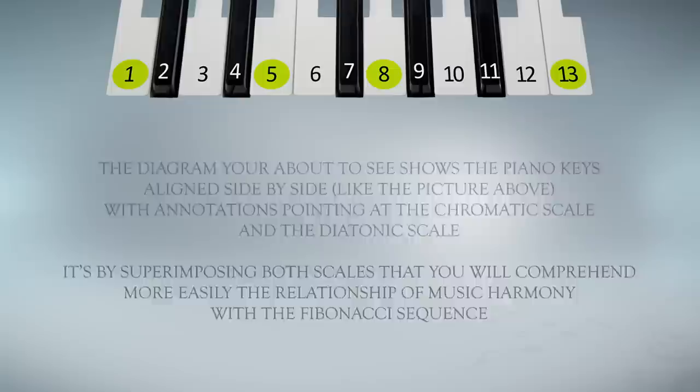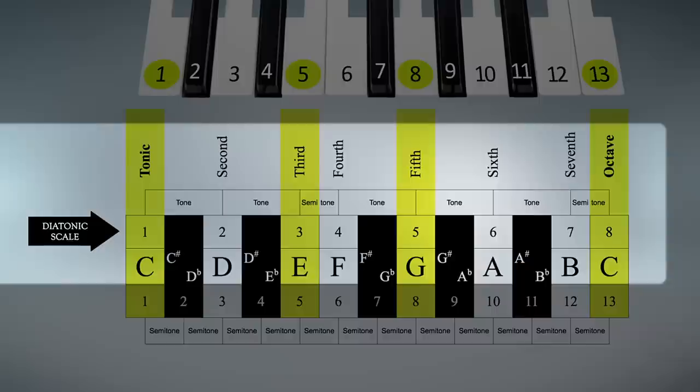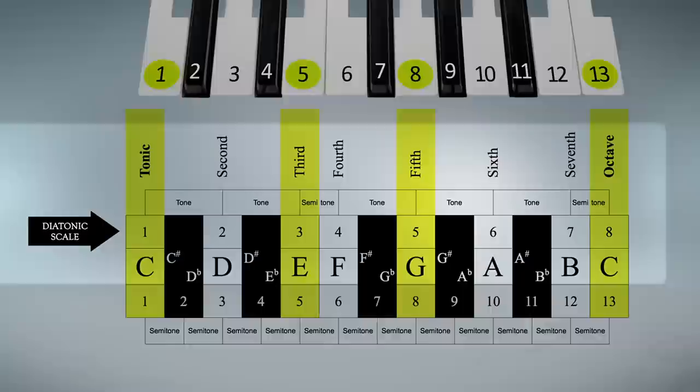This is the chromatic scale. And this is the diatonic scale. By identifying them, one on top of the other like that, we can see the golden number appear.